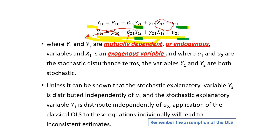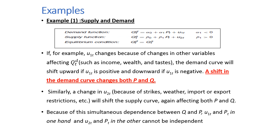Let us check this assumption concerning simultaneous equation models using a common and famous example: the supply and demand. We know that the demand and supply can be represented by these equations, where the quantity demanded is represented by the price, and the quantity supplied is also represented by price, under the important equilibrium condition that quantity demanded and quantity supplied must be equal. We need to check whether U1 and Pt in the first equation are independent, and whether U2t and Pt in the second equation are independent.